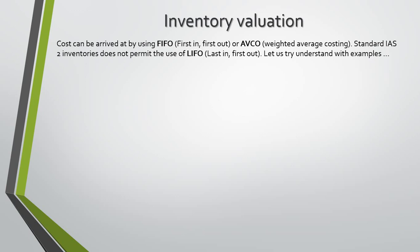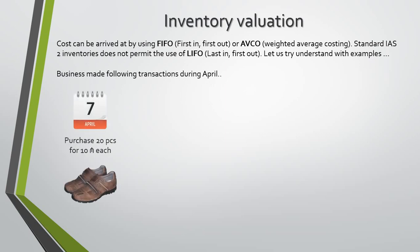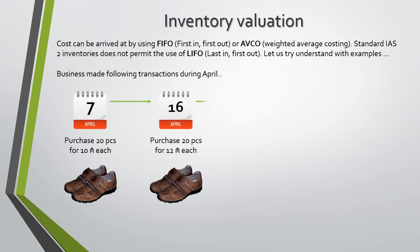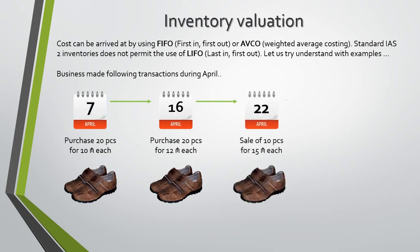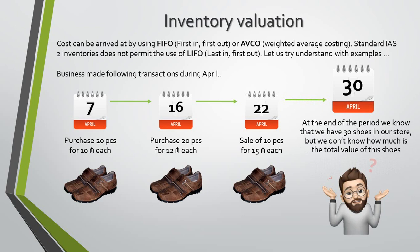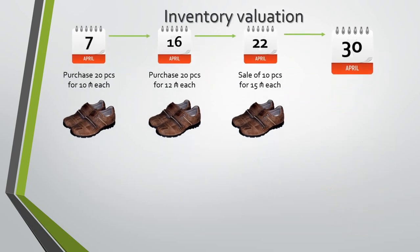Let's try to understand with examples. Suppose that a business made the following transactions during April. On the 7th of April, the business purchased 20 pairs of shoes, each for 10 ASE. On the 16th of April, the business again purchased 20 pairs of shoes, but now each for 12 ASE. On the 22nd of April, we sold 10 pairs, each for 15 ASE. When we came to the reporting date, there will be a problem regarding valuation of the inventory. At the end of the period, we know that we have 30 shoes in our store, but we don't know the total value of the shoes.